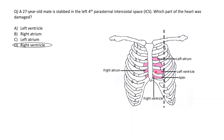They could change the question — if the person was stabbed in the left fourth intercostal space close to the MCL, the answer would be the left ventricle. If stabbed in the left fifth intercostal space at the MCL, the answer would be the apex, because that's exactly where the apex is located.